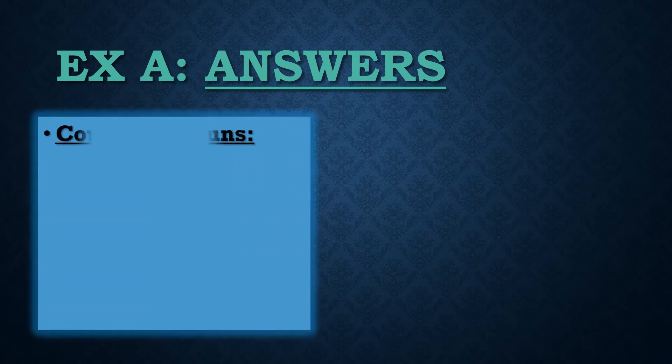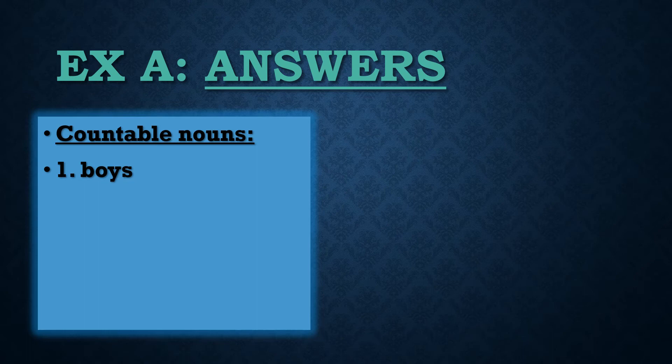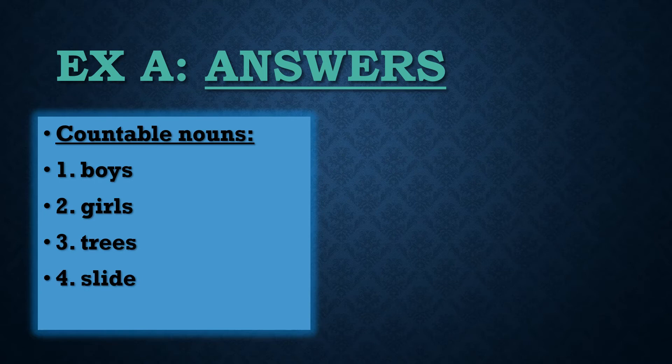Let us see the answers. First, the countable nouns in the picture. Number one: boys — there are many boys. Number two: girls — there are some girls too. Number three: trees — we can see some trees. Number four: slide — there is a slide in the picture. Number five: ducks — in the water, we can see two ducks. If you find any countable nouns of your own, you can write them, or copy the ones I have written.